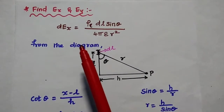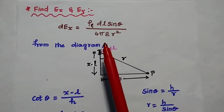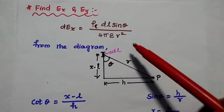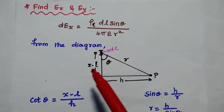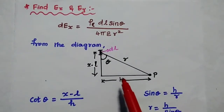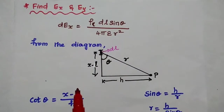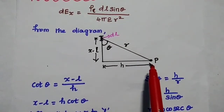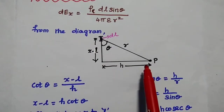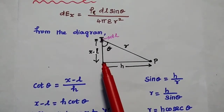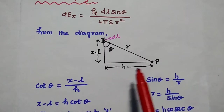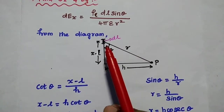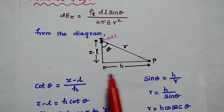Here dEx equals ρL·dl·sinθ divided by 4πεr². We are going to find the values of dl and r from the diagram. For that we consider the small element to point P, where h represents the horizontal distance from the line to this point. This side has value x minus L, and this distance is r.